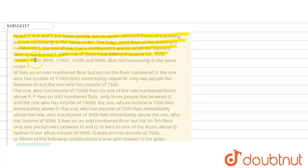Till the topmost floor which is number seven. Each one of them have different income: 3500, 15000, 7500, 9000, 11000, 13500 and 5000, but not necessarily in same order. M lives on odd numbered floor but not on floor number three. The one who has income of 11000 lives immediately above M.